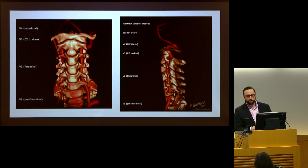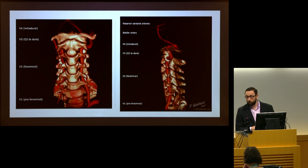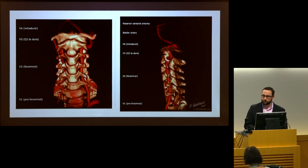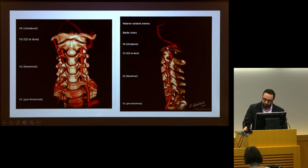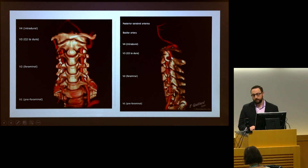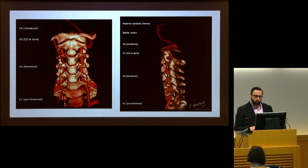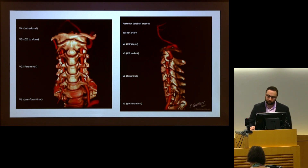There are several important blood vessels we take into account when considering surgery in this region. The vertebral arteries are an important blood vessel supplying blood to the back of the brain and brainstem. They travel through a little hole on the side of the cervical spine from around the sixth or seventh bone up to the first bone. At the cranial cervical junction they take several loops that can vary tremendously from patient to patient. Injury to these vessels can cause stroke, which can be devastating, especially a brainstem stroke.